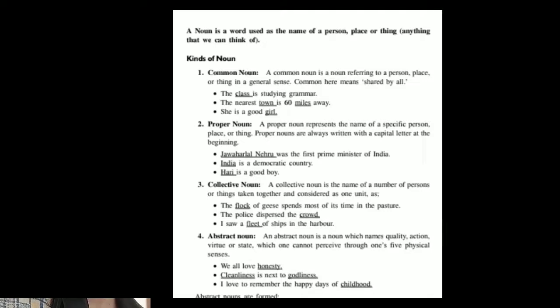What is noun? Noun is the name of a person, place or things. What are the kinds of noun? Common noun, proper noun, abstract noun, material noun, collective noun. These are the kinds of nouns. We have to learn closely.